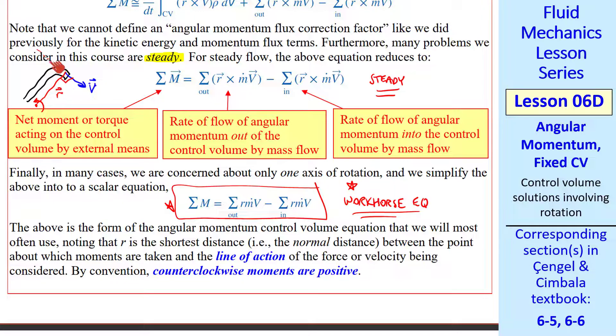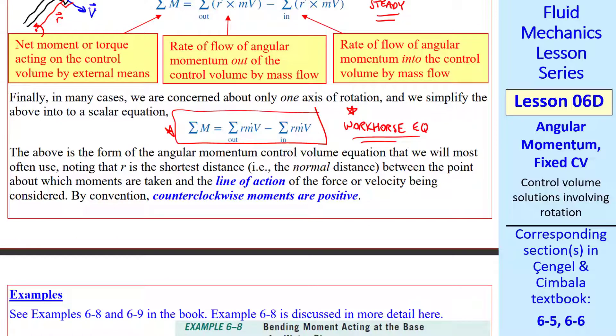As I showed here, R is the shortest distance or the distance at 90 degrees to the outlet or inlet velocity vector. The same holds true for forces. By convention, counterclockwise moments are positive. Using the right-hand rule, we're in this plane of the page. Counterclockwise moments about that point or line coming out of the page are positive.